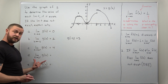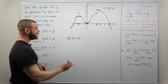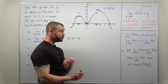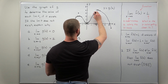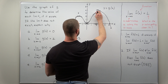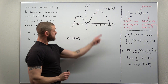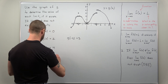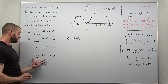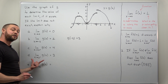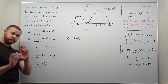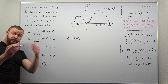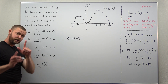Part D: we approach two but now from the left side. Following along the other side of the graph, the Y values get close to three. So the limit as X approaches two from the left exists, and it equals three.